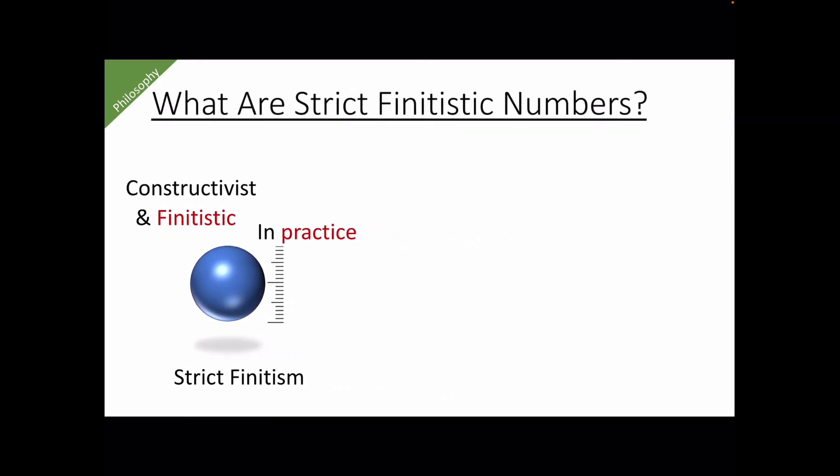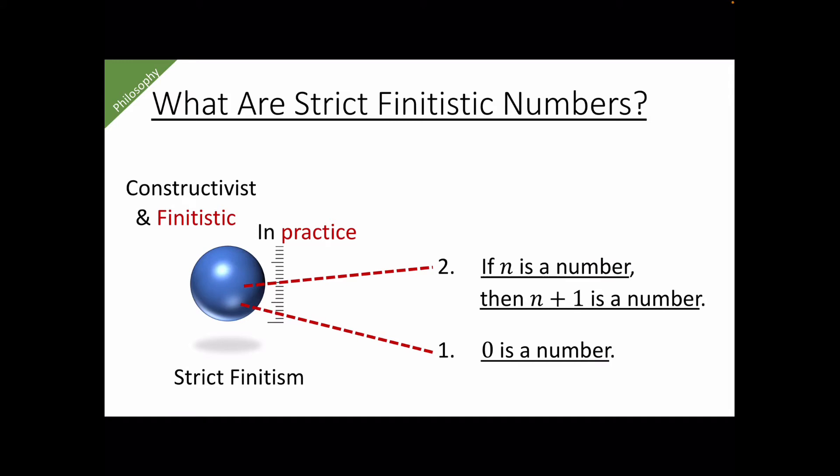Now, what are strict finitistic numbers? To start off, of course, 0 is constructible in practice, so it is a number. But thinking about the notion of constructibility in practice, we want to say that if we can construct something in practice, then we should be able to construct the next thing in practice too. So we say that if n is a number, then the successor of it is also a number. But because this is a finitistic standpoint, the legitimate numbers are bounded from above. This means that we should give up induction in the normal sense, which is on the natural numbers.